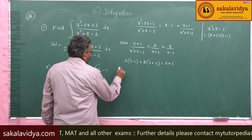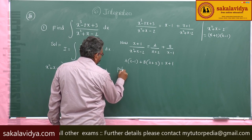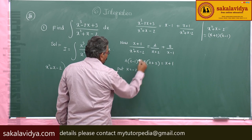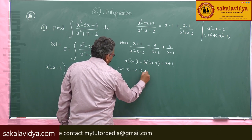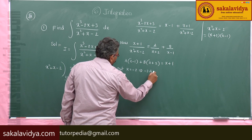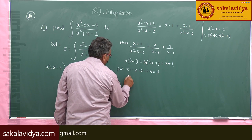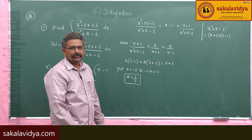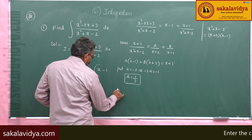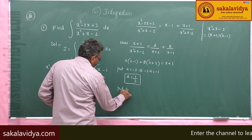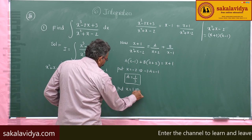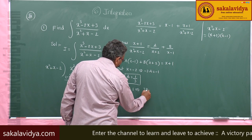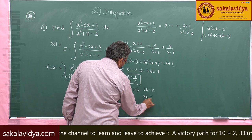Using the substitution method: put x = −2, which makes one term zero, giving −3A = −1, so A = 1/3. Then substitute x = 1; this gives 3B = 2, so B = 2/3.